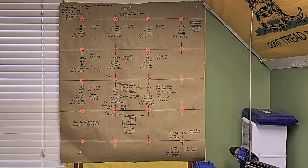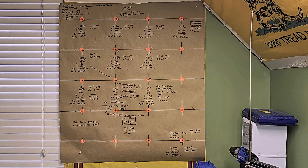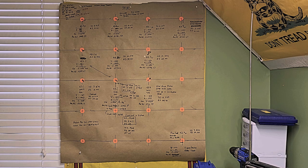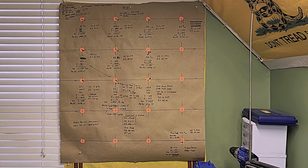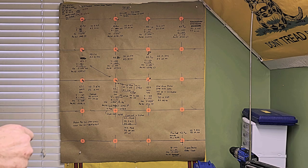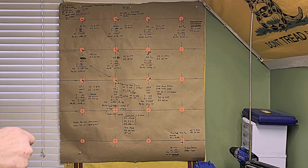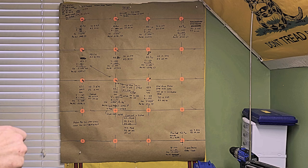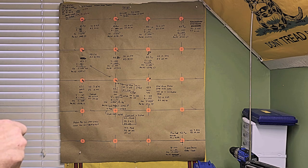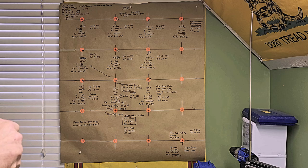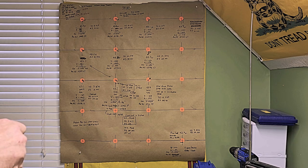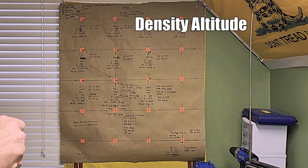So this is the results of the velocity node testing. I went everywhere from 42.5 grains all the way up to 44.3. 44.3 was over max, 44 was the max, and actually I think both of those were compressed loads with this Staball powder. But I didn't have to do quite as many because I had a pretty good idea where my velocity node was going to be, somewhere in the 2750-ish range. This was actually done on July 14th. The temperature range was from 79 to 85 degrees and average pressure altitude was about 2441.